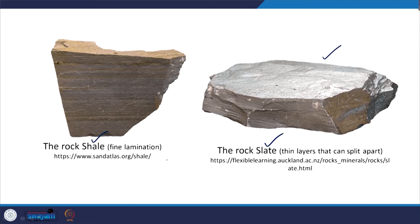Both shale and slate are foliated, very fine grained, hard and brittle. Color can be variable: black, shades of blue, green, red, brown and buff. They usually contain mica minerals which impart a sheen on foliation surfaces, and are smooth to touch. Uses of slate include roof and floor tiles, construction, blackboards, and as the standard material for the beds of pool, snooker or billiard tables.